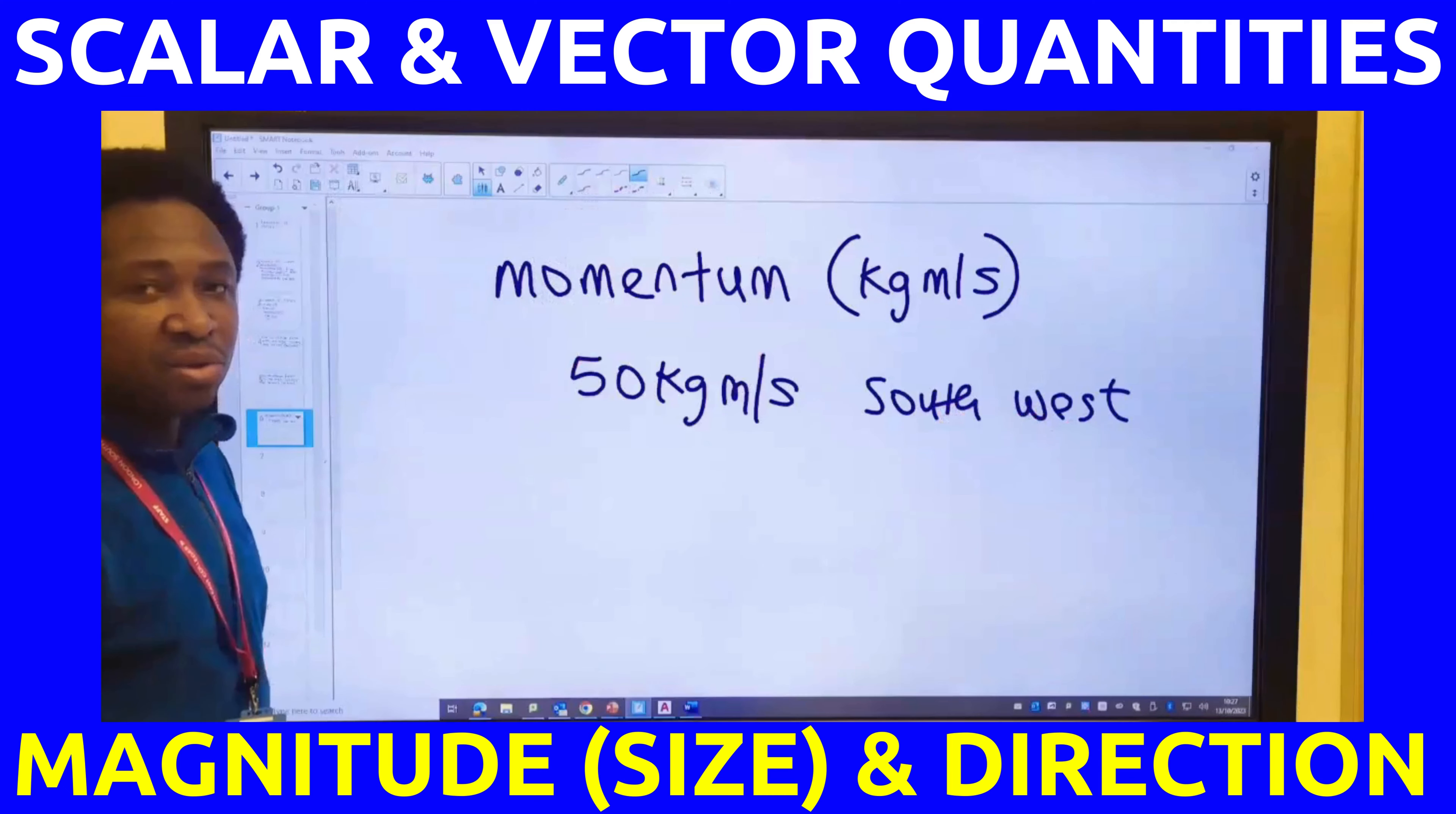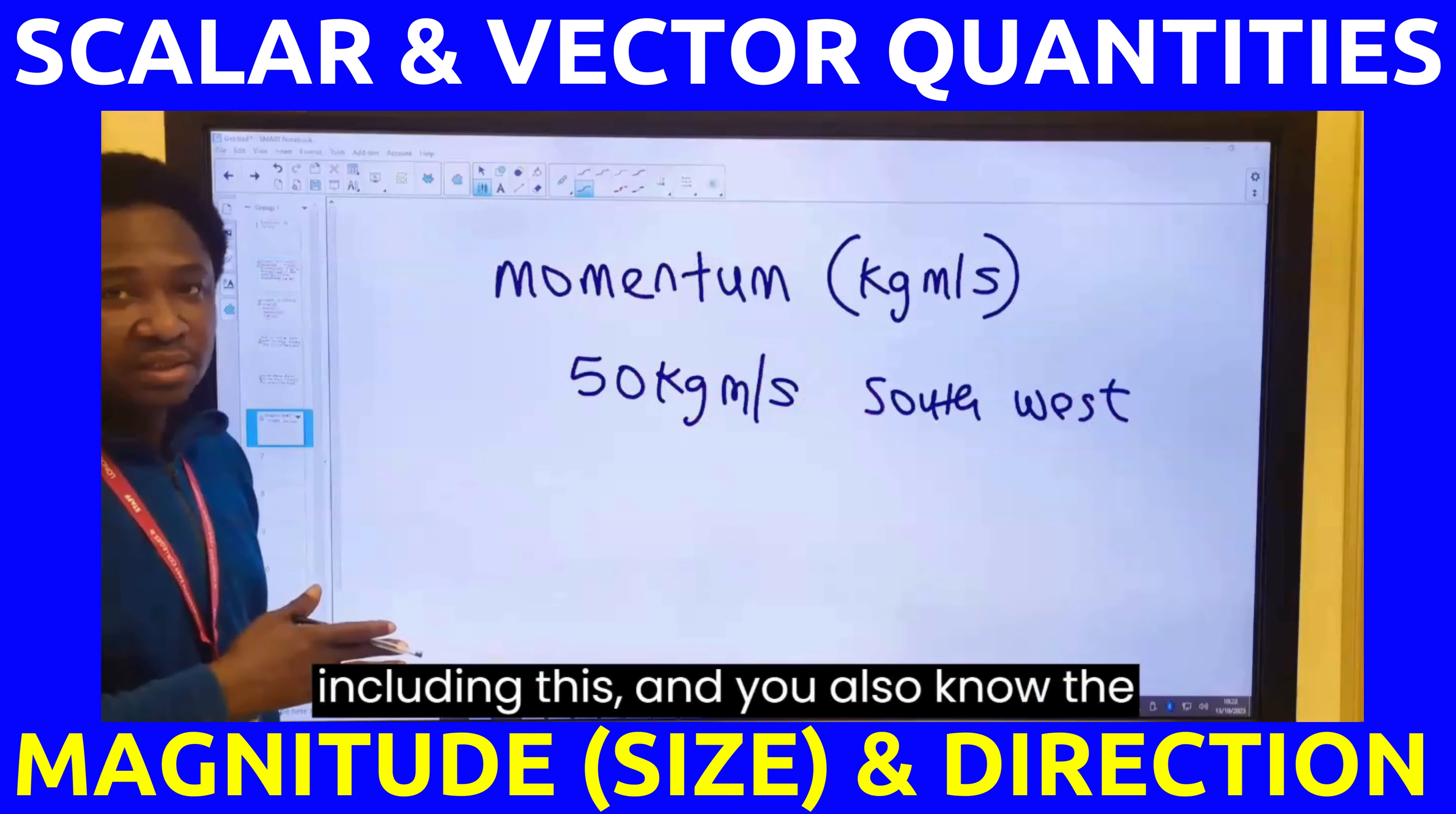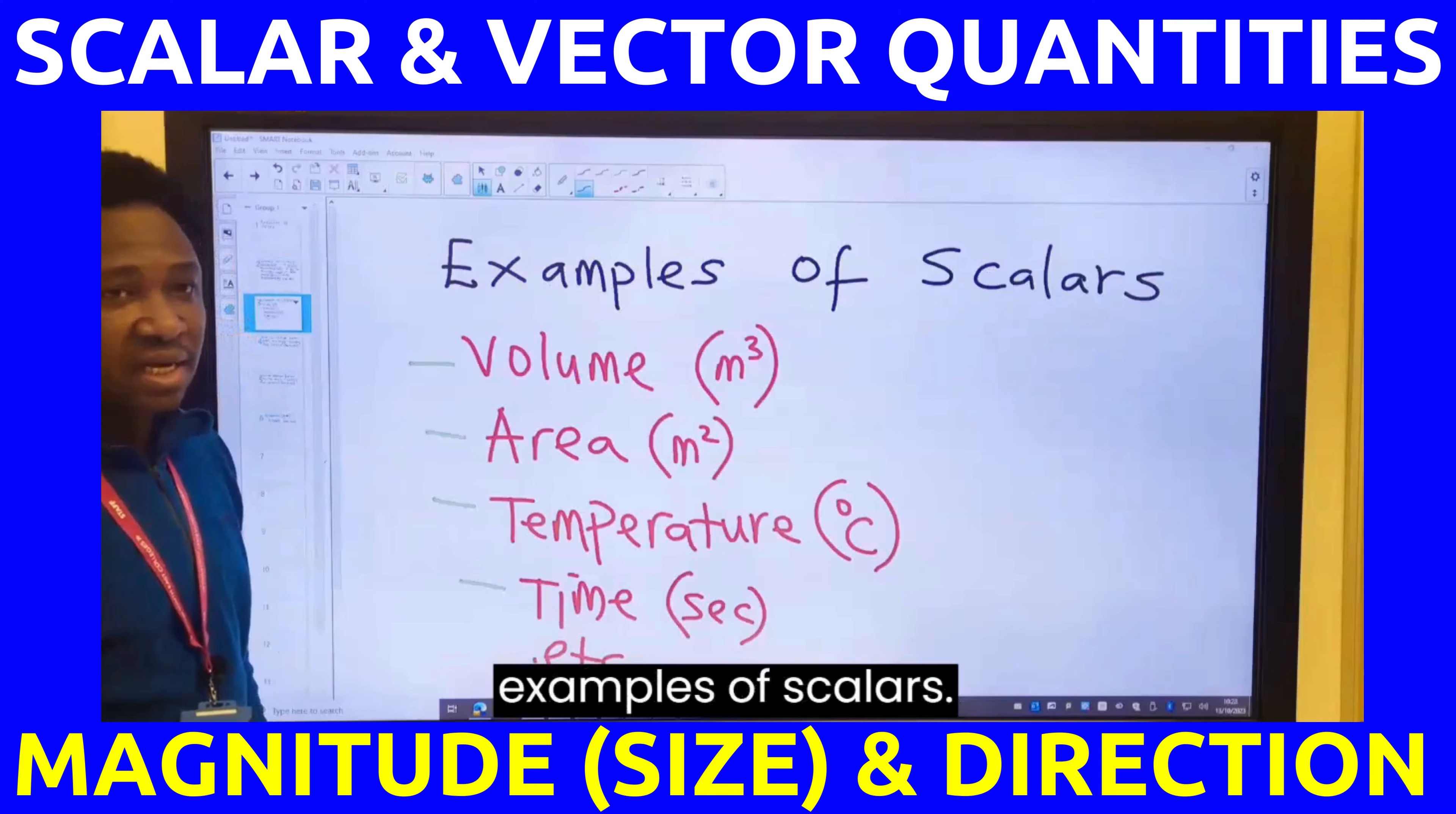If I say the momentum is 50 kilogram meters per second southwest, I'm talking about momentum. So, now you know examples of vectors, including this. And you also know the examples of scalars.